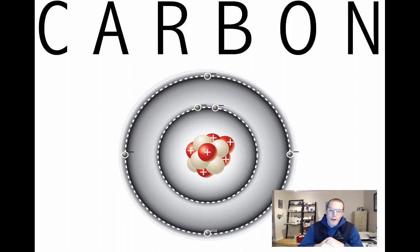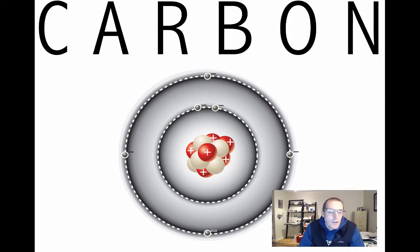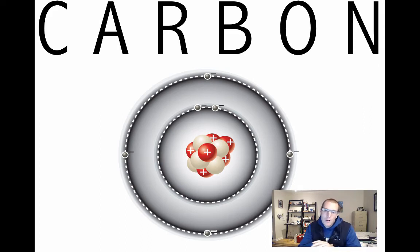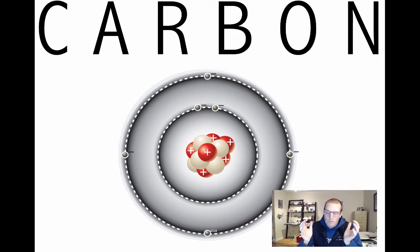Carbon has four electrons in its outer shell and needs another four to meet the octet rule. It can form four single covalent bonds — sharing two electrons per bond — giving it a total of eight. Or it could form two double bonds, sharing four electrons, also giving it eight electrons in its outer shell. So the valence of carbon is four: it can make four covalent bonds with other atoms, giving it a very high diversity of possible arrangements.